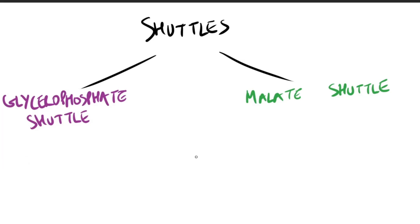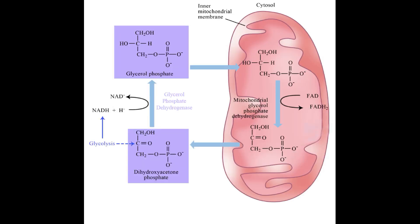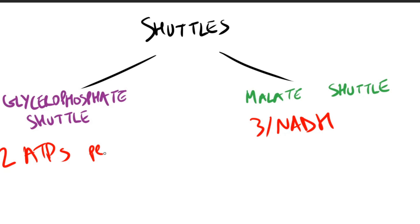The key difference between the two shuttles: the malate-aspartate shuttle regenerates NADH inside the mitochondrial matrix, maximizing ATP production — one NADH gives approximately three ATPs. The glycerophosphate shuttle, however, reduces FAD to produce FADH2, and is therefore only capable of generating two ATPs per NADH from glycolysis instead of three. That's it for this video — see you in the next one!